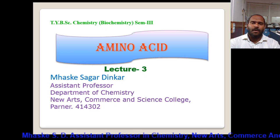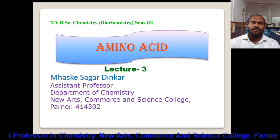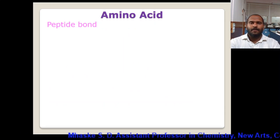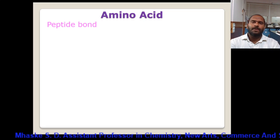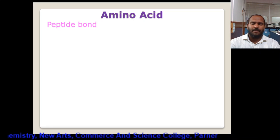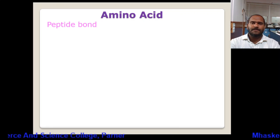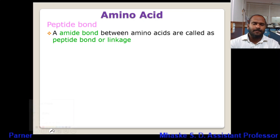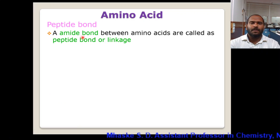Further continuing with the same topic of amino acids, we will discuss the formation of peptide bonds. These peptide bonds are important because they are the backbone of the polypeptide chain or protein. Therefore study of these peptide bonds is important. Amino acids are joined together to give the formation of a polypeptide chain by amide linkage, and that linkage is called a peptide bond.